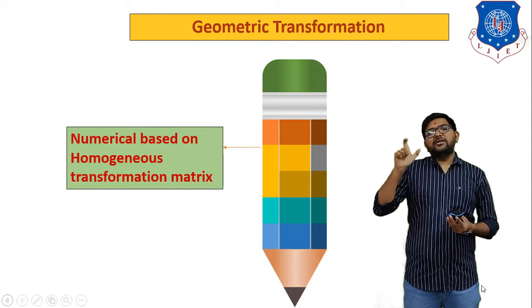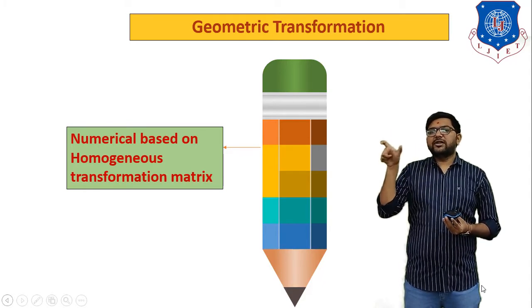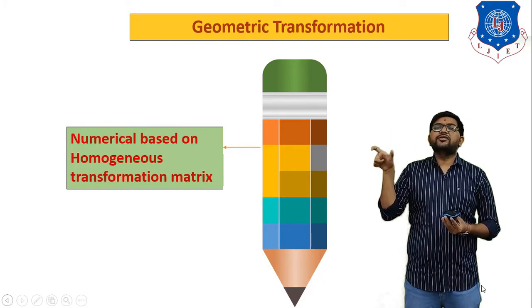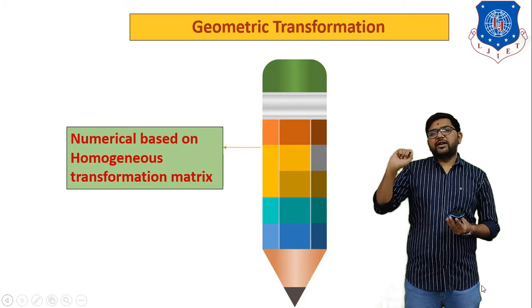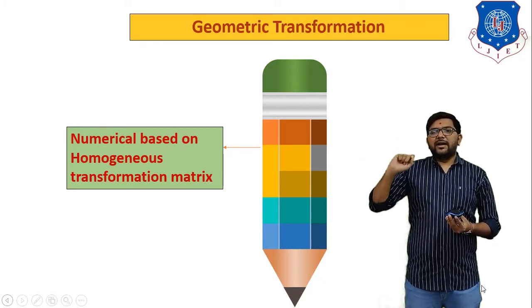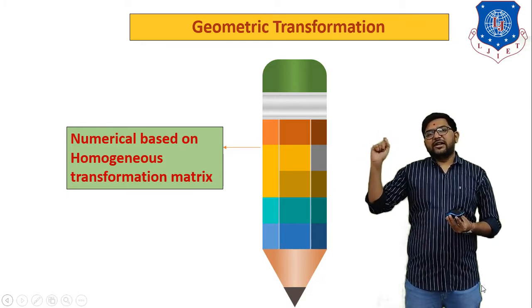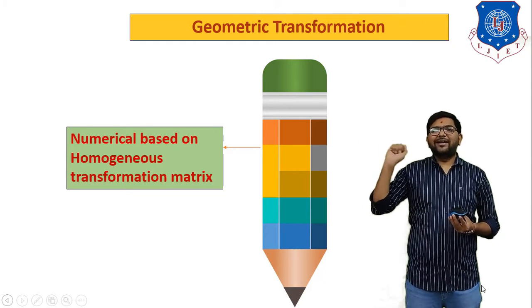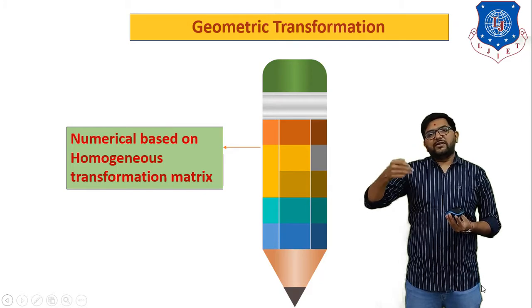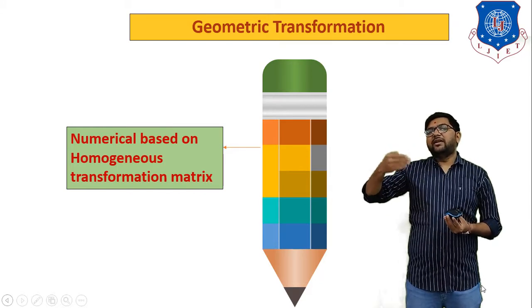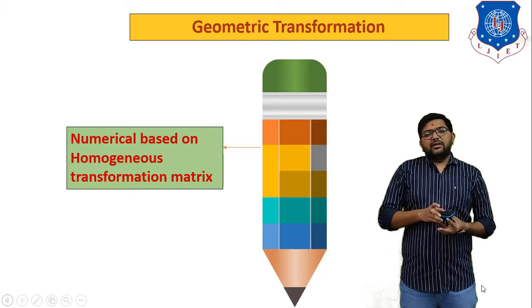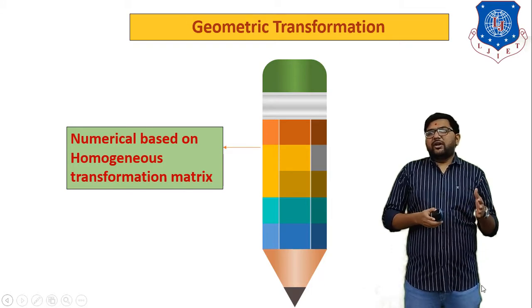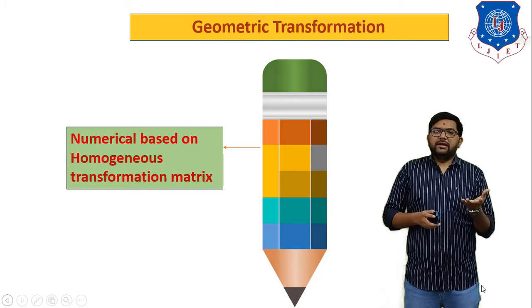For the homogeneous transformation matrix for rotation — for anticlockwise rotation — the equation is [cos θ  sin θ  0 / −sin θ  cos θ  0 / 0  0  1], where theta indicates the angle of rotation. We also derived equations for mirroring, covering reflection above the X axis and Y axis. We will use all of these equations to solve the numerical.